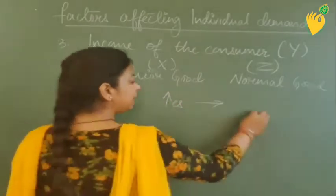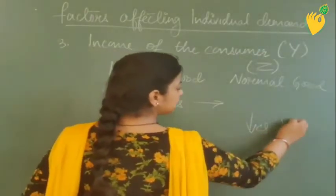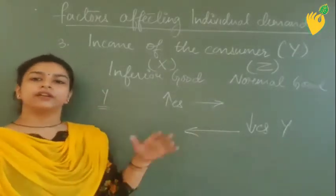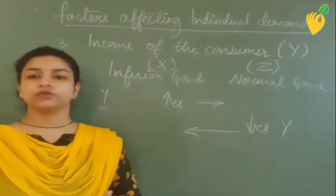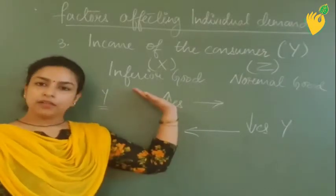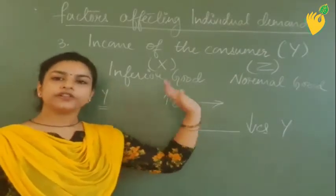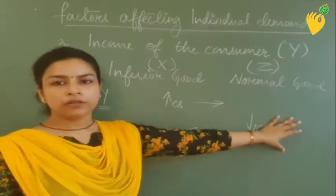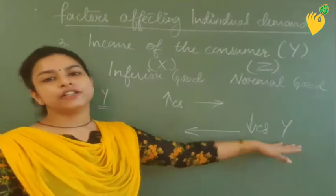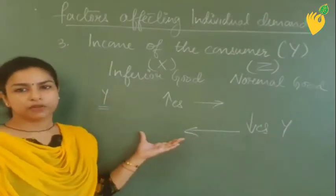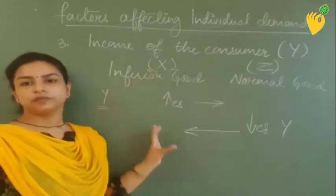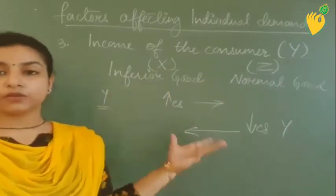Whenever there is an increase in the consumer's income, he will shift away from the inferior good towards the normal good. Whenever there is a decrease in income of the consumer, he will again shift back towards the inferior good. That is the basic concept of these two goods.